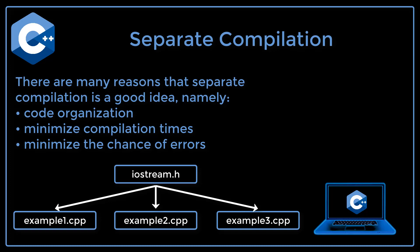So you may have many files like example.cpp, example2.cpp, and example3.cpp, all of which utilize the code in the iostream header file. Separate compilation is what makes this abstraction of functionality possible.